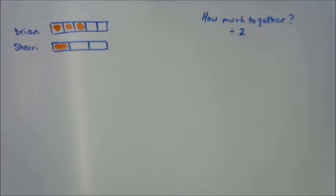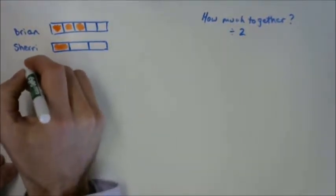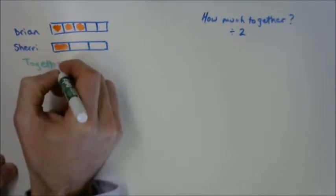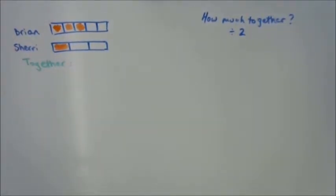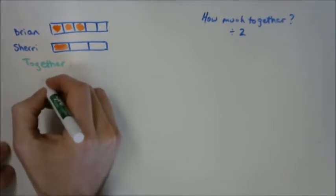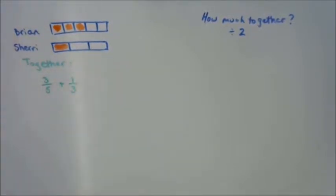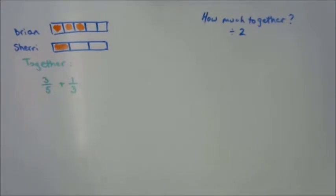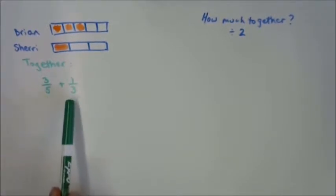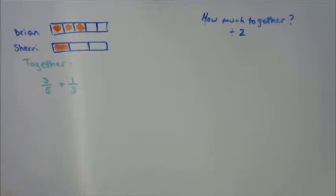Now we need to figure out how much they have together. What's the operation in math that we use to find out how much you have together? You add things together. So Brian has three-fifths and Sherry has one-third. When you took your guesses, not a single person came up with the exact right answer, which leads me to believe we're not quite sure how we should be adding these fractions. Can I add fifths and thirds? No — it doesn't make any sense. So I need to find a common denominator.